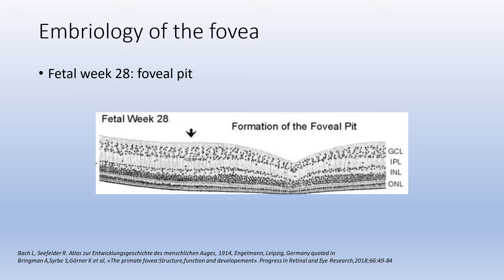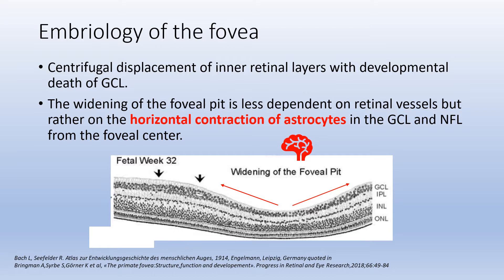The foveal pit is proposed to be formed by a vertical contraction of the central-most Müller cells. After widening of the foveal pit, likely mediated by retracting astrocytes, the primary fibers are formed by horizontal contraction of Müller cell processes in the outer plexiform layer and the centripetal displacement of photoreceptors. By centrifugal displacement of the inner retinal layers, which increases the transparency of the central foveal tissue, the primate fovea externa improves the quality of the image received by central photoreceptors.